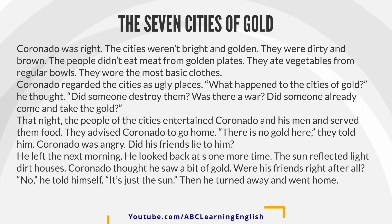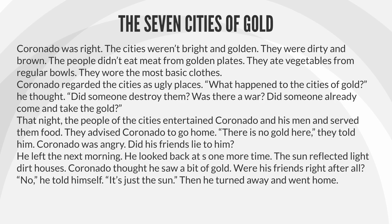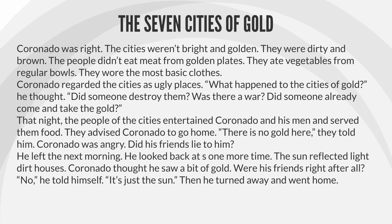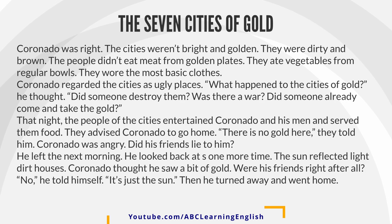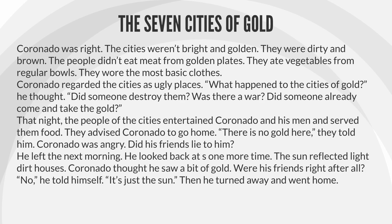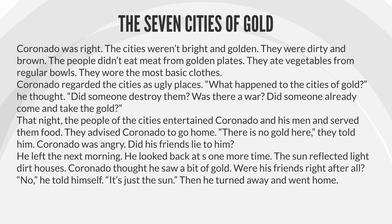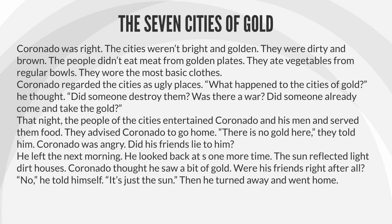That night, the people of the cities entertained Coronado and his men and served them food. They advised Coronado to go home. There is no gold here, they told him. Coronado was angry. Did his friends lie to him? He left the next morning. He looked back at the cities one more time. The sun reflected light on the dirt houses. Coronado thought he saw a bit of gold. Were his friends right after all? No, he told himself. It's just the sun. Then he turned away and went home.